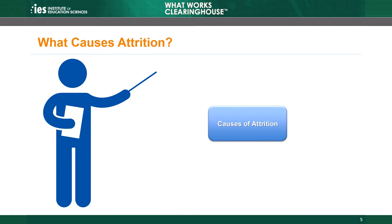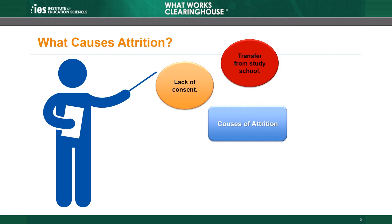What causes attrition? There are many reasons why a study may not include data for a sample member who went through random assignment at the beginning of a study. This slide presents a few causes, though it is certainly not an exhaustive list. For example, parents may not consent to their child's participation in the study, students may move and transfer to a school that isn't participating, or students may be absent when the study collects data.